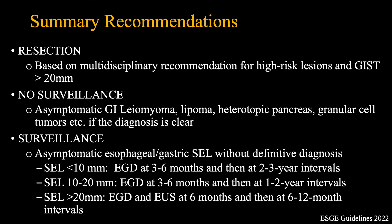However, if a tissue diagnosis is not available and the patient is asymptomatic, subepithelial lesions less than 10 millimetres in size must be followed with an EGD first at three to six months and then at two to three-year intervals. For lesions 10 to 20 millimetres, the surveillance interval should be shorter at one to two-year intervals. For lesions greater than 20 millimetres, surveillance should include both EUS and EGD first at six months and then at six to twelve-month intervals. The level of evidence for these recommendations is weak to moderate at best.